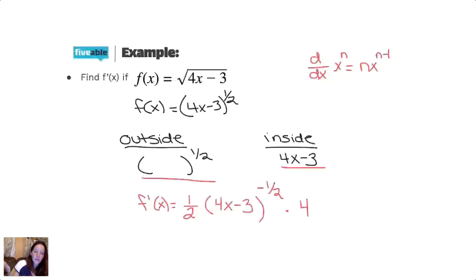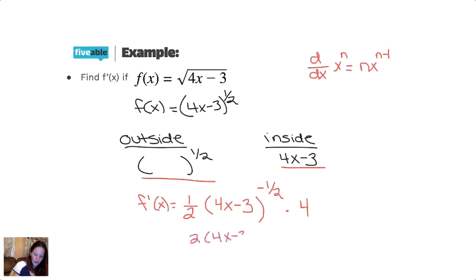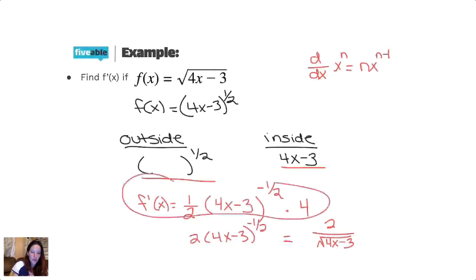Step 1: derivative of the outside — one-half got brought up front, I've got my something to the negative one-half. Step 2: copy the inside, so we take that inside function 4x minus 3 and copy it right into those parentheses. Step 3: derivative of the inside — the derivative of 4x minus 3 is 4. So we have our derivative. That's the whole chain rule. We could clean that up and write it as 2 over the square root of 4x minus 3. If it's free response, you can leave it right there and not risk making a silly mistake.